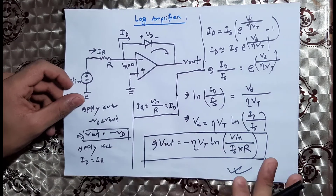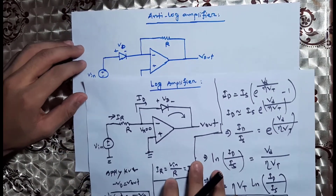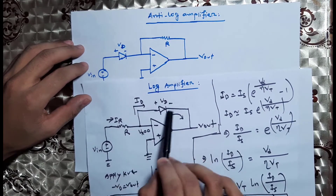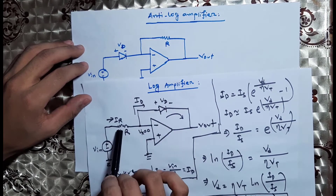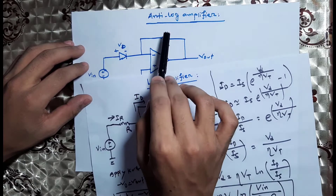Just this circuit — when we use the diode feedback, we will use this diode. Then we will use the diode feedback resistance.